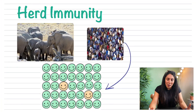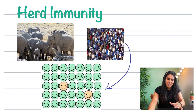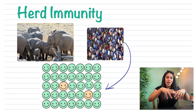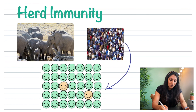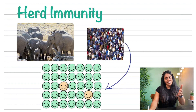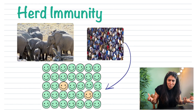This brings us to the concept of herd immunity. When I think of herd, I think of a herd of elephants — a group of something. Looking at this picture, I have a really dense group of people — let's say this is Leicester Square in London, really populated. So what is herd immunity?